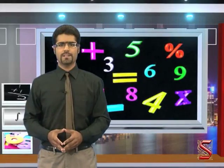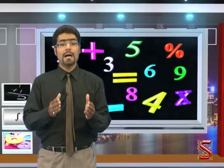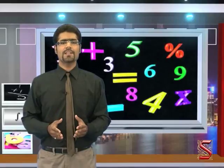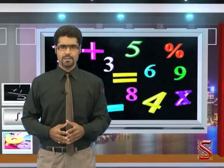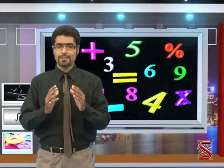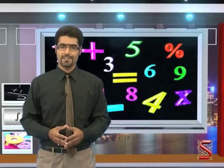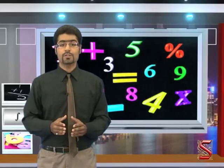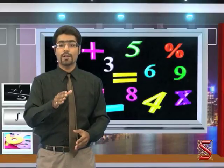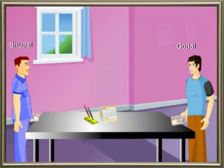In a partnership, as we see in business, the amount invested initially is called capital. A business is generally undertaken by two or more persons. If one person cannot invest the entire amount, he takes the help of another person and runs the business. The business undertaken jointly is called partnership business, and those who run it jointly are called partners.